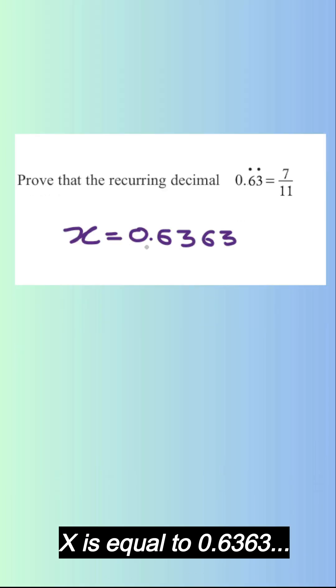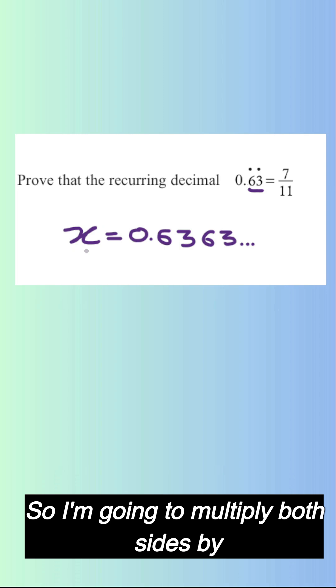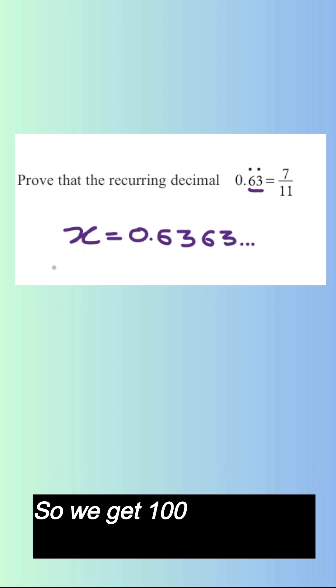X is equal to 0.6363 dot dot dot. Now we have two recurring places here. So I'm going to multiply both sides by 100. So we get 100x here and this becomes 63.63 recurring.